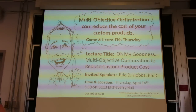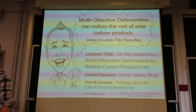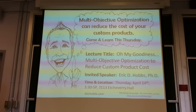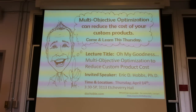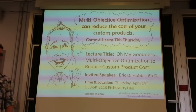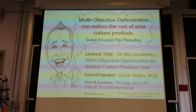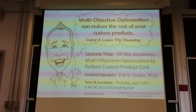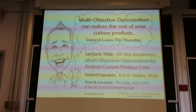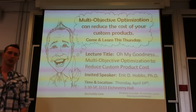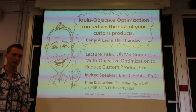Thank you, David. Thanks for having me out and thanks for showing up. So the title is multi-objective optimization to reduce cost, but actually the title should be 'how to eliminate your job.' I'm going to show how you can use parametric models and optimization to basically automate design. And if you do that, then you can go work on other cool things, which is actually really important.